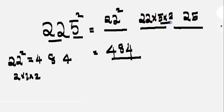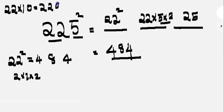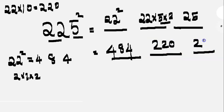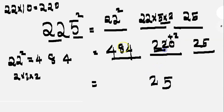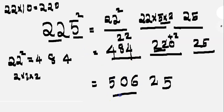This is the multiplication. 5 into 2 is 10, so 22 into 10 is equal to 220. We write 0 and carry 22. Adding: 220 plus 2 is 222. Then 4 plus 2 is 6, 8 plus 2 is 10 — carry 1, and 1 plus 4 is 5. The answer is 50,625.